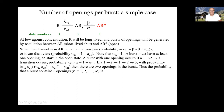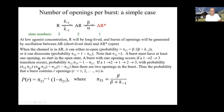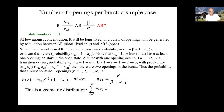If we get more than one opening per burst, starting here it goes there; if it reopens once and then goes back to the resting state, that gives paths 1 to 2 to 1, then 1 to 2 to 2 to 3. You can easily generalize and see that the probability of getting r openings per burst is pi-2-1 to the r-minus-1 times 1 minus pi-2-1, where pi-2-1 is beta over beta plus k-minus-1. That's a geometric distribution.